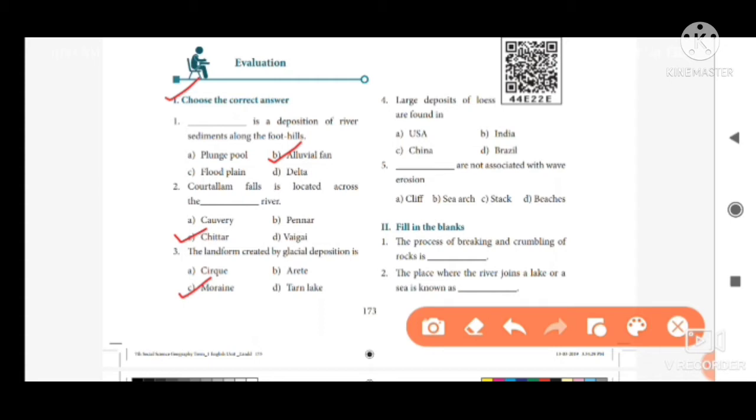Then fourth one, large deposits of loess are found in option A, USA, option B, India, option C, China, and option D, Brazil. The answer is option C, China.